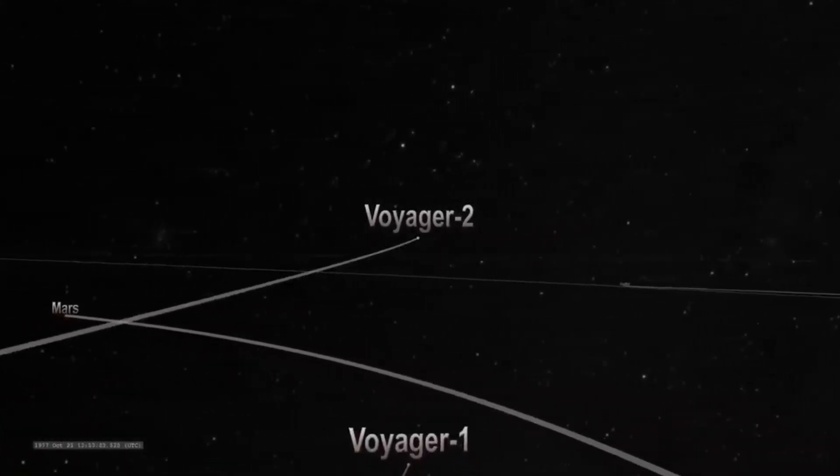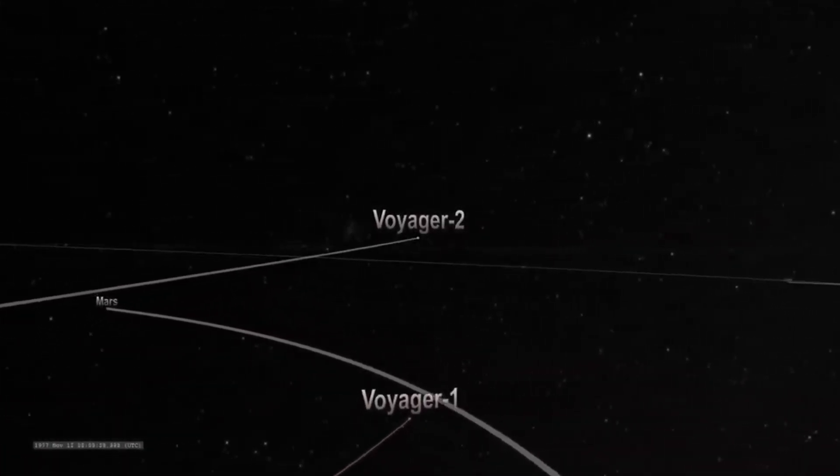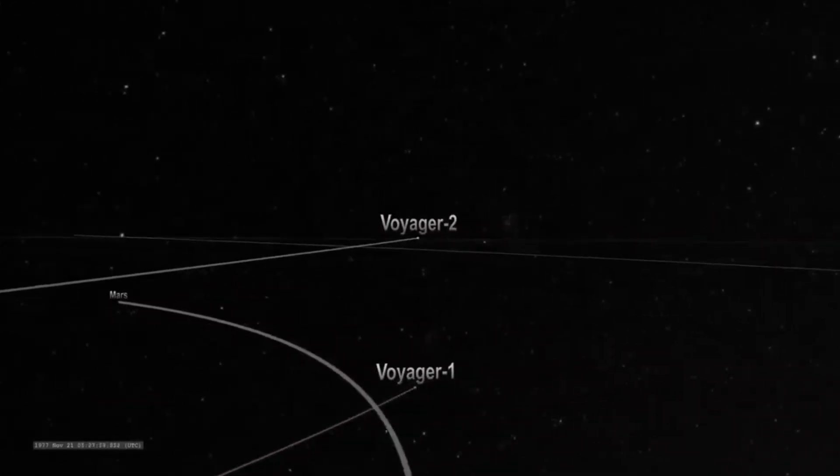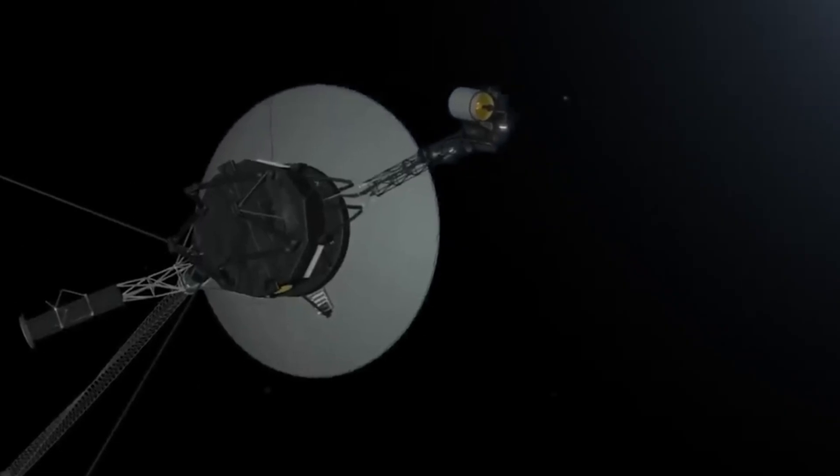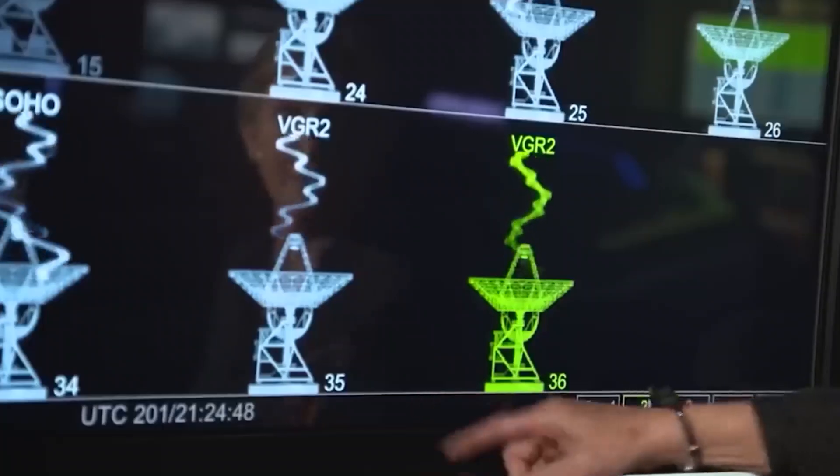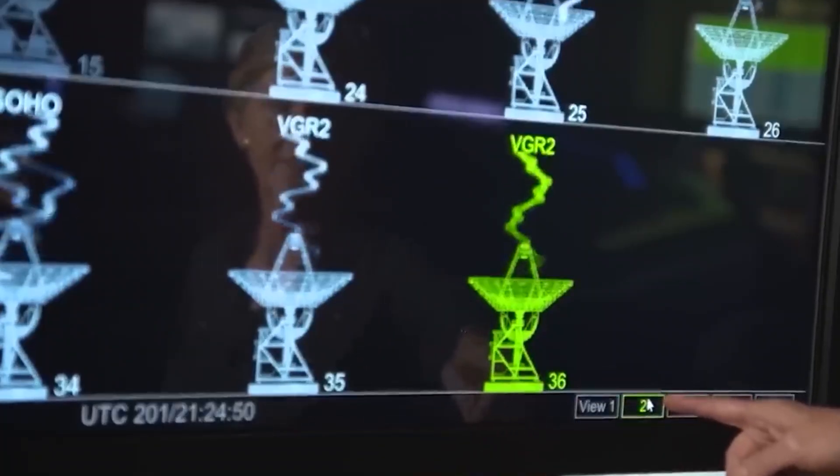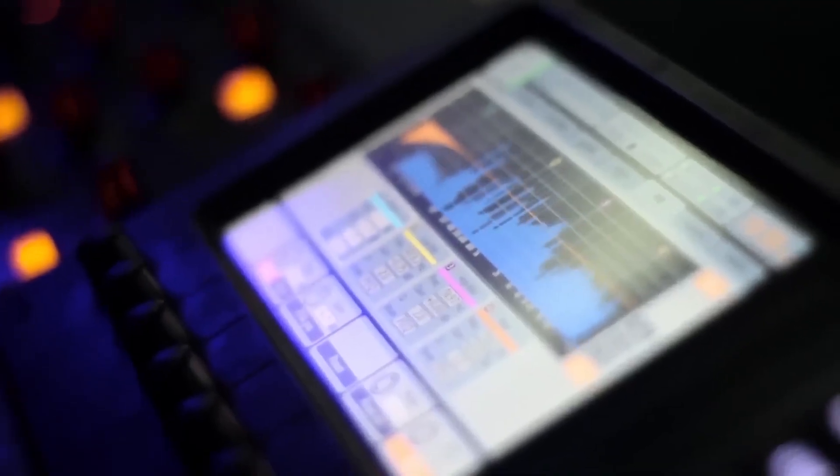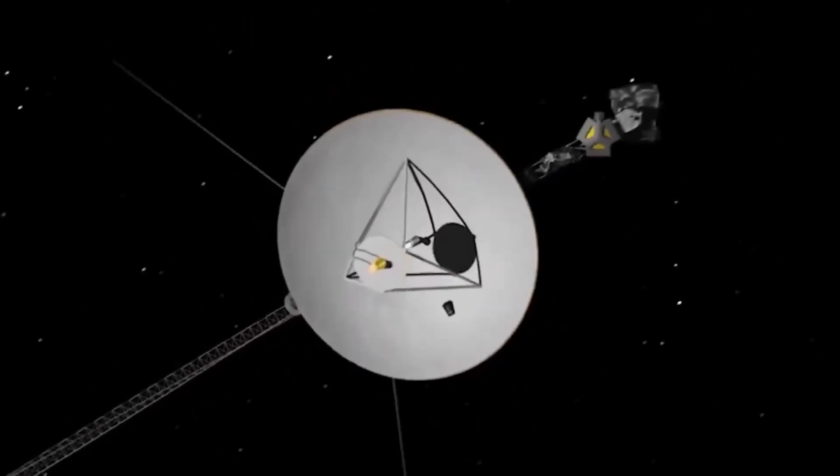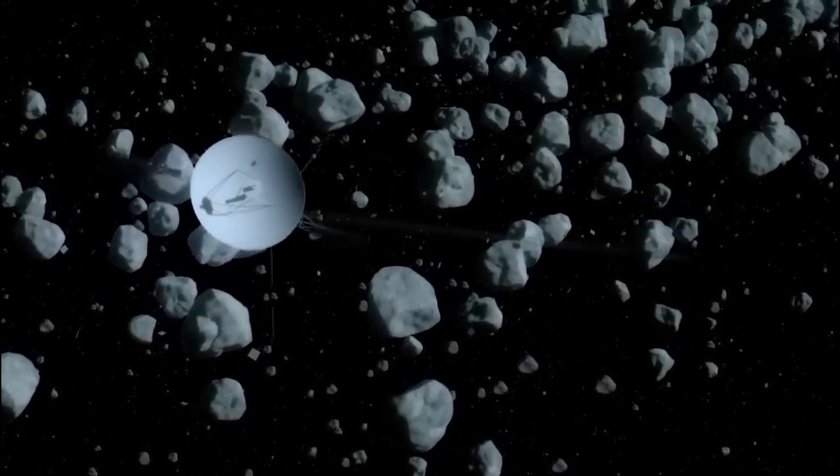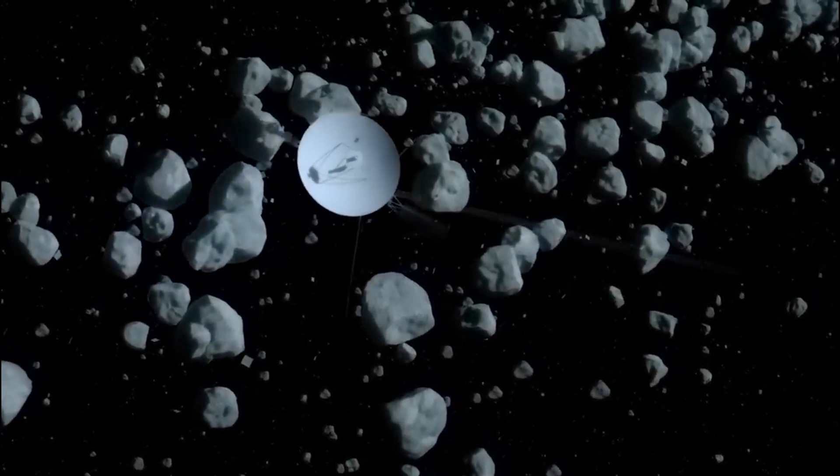In 2018, Voyager 2 also crossed the heliopause on November 5. This time, there was no doubt. The spacecraft's plasma instrument was working properly and recorded the increase in the density of particles, such as protons, electrons, and other charged particles. It also measured the temperature, which ranged from 30,000 to 50,000 Kelvin, much higher than that of the interstellar medium. The plasma was probably compressed as it entered the heliosphere, which explains what happened.